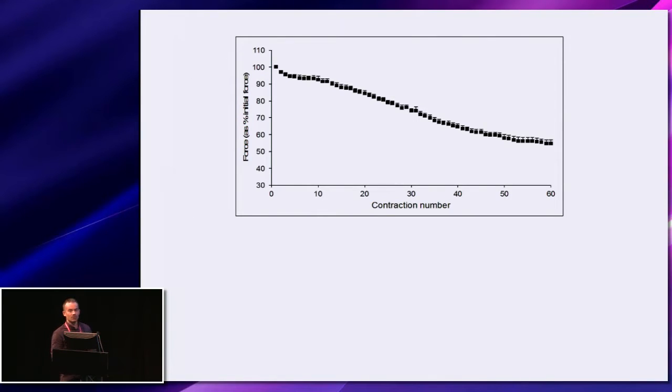There's also a slowing of the rate of contraction and a slowing of the rate of relaxation, and together the slowing of contractile properties and the loss of force leads to a loss of muscle power, and that's quite dramatic.